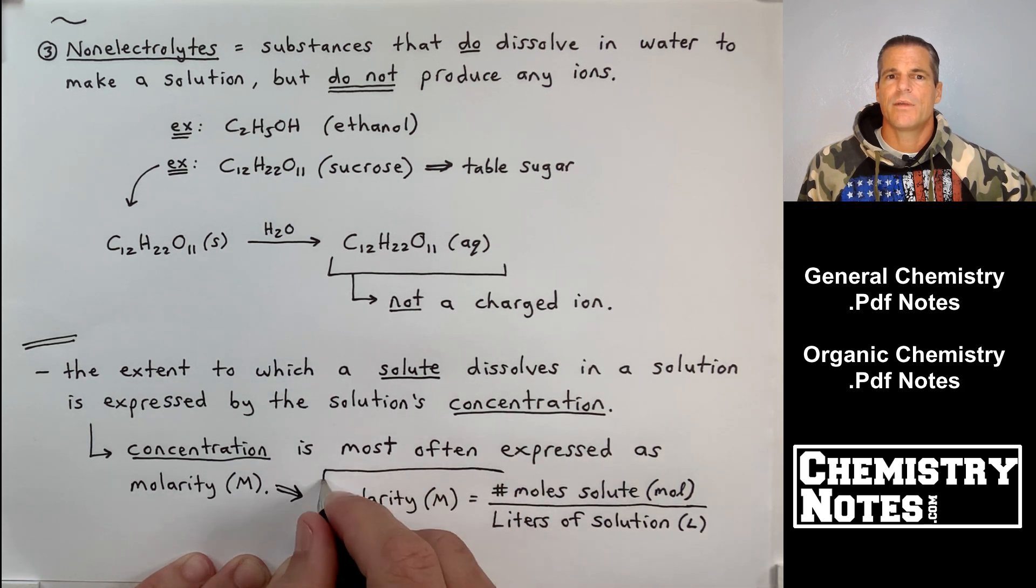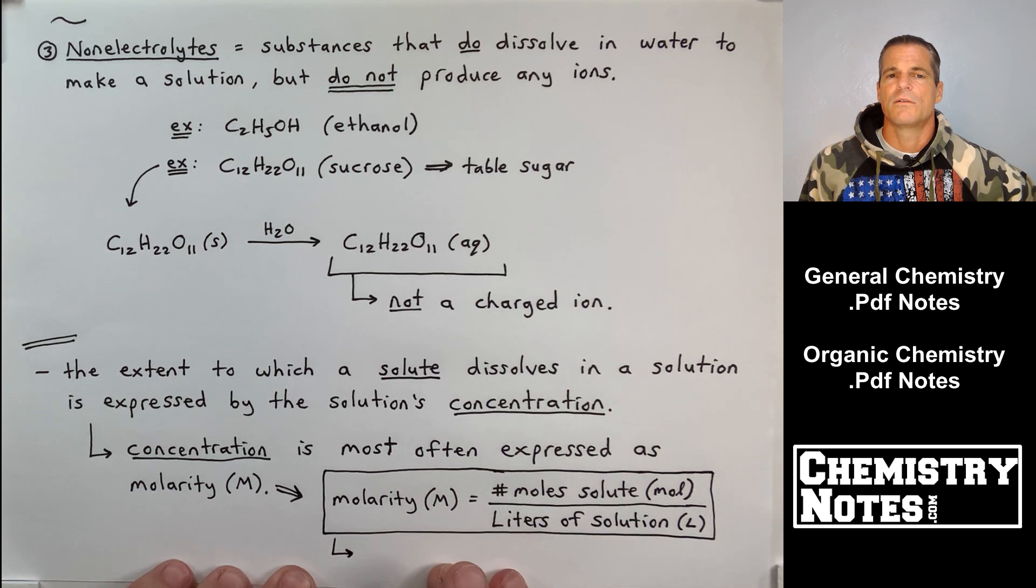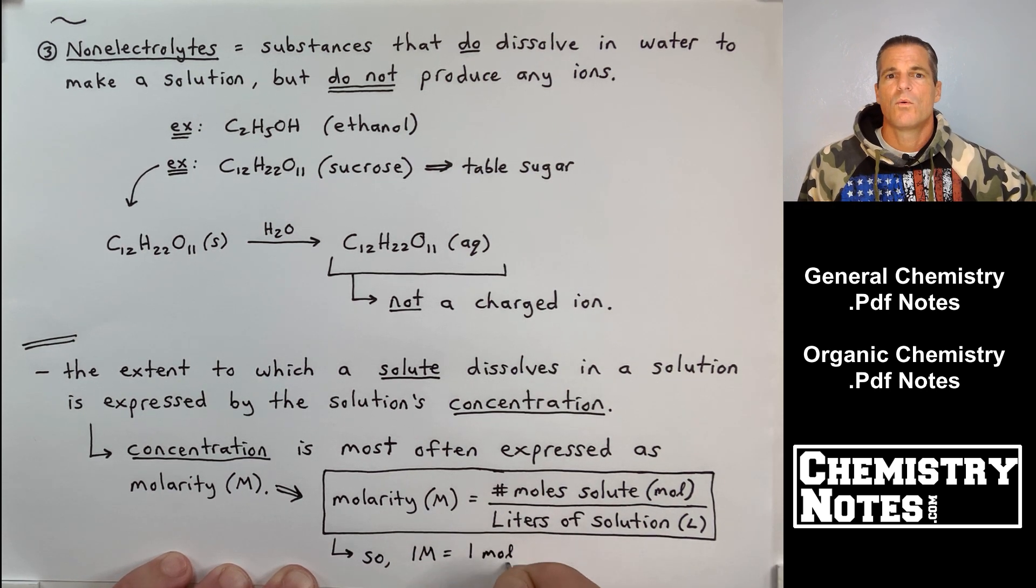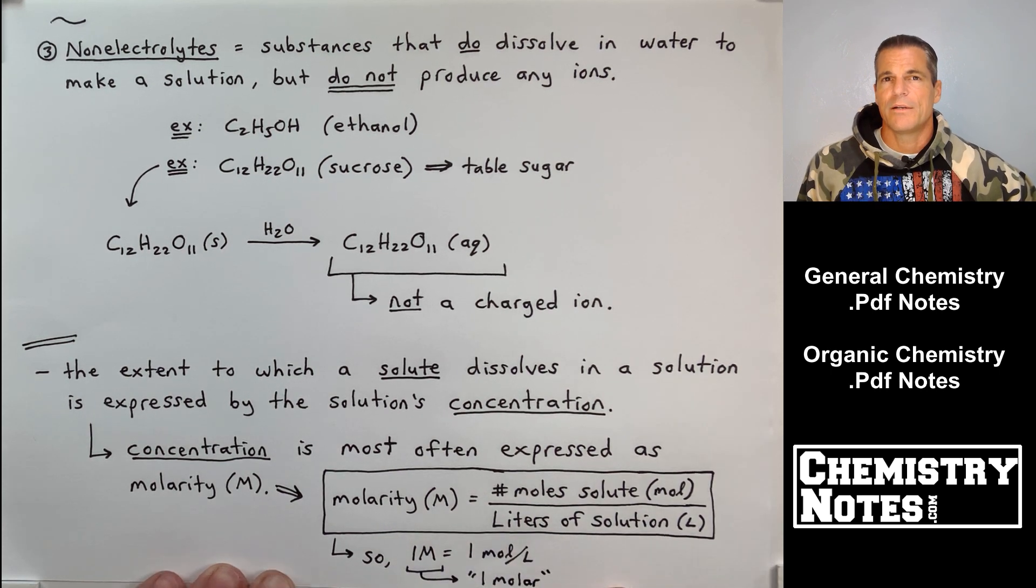So molarity is the number of moles of solute divided by the total liters of solution. Put a box around that, you're going to need that. Molarity, big M, is moles of solute per liter of solution. So 1M is 1 mole per liter, 1 molar is 1 mole per liter.